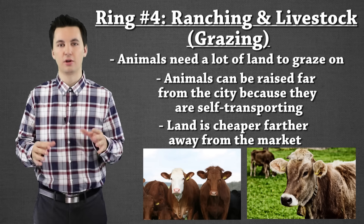Anything past the livestock ring is known as the wilderness in the model. That doesn't mean no one lives out here — this might even be a hinterland between different areas. What this means is you're so far away from the main market that you're not going to be able to make a profit. So we're not going to see commercial agriculture this far out because transportation costs would be too high and it would be too expensive to get it to market.